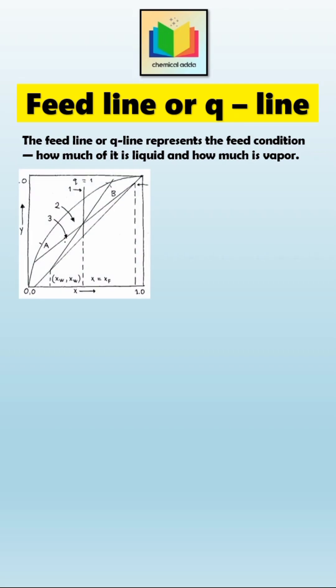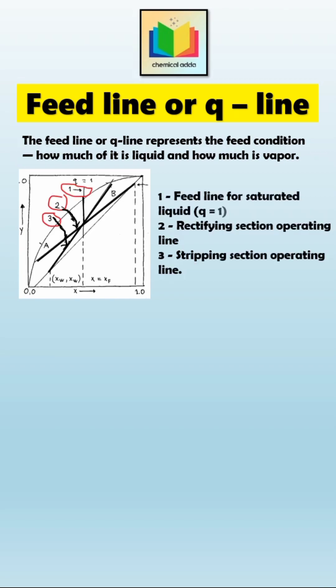On the McCabe-Thiele diagram, the Q line is the line that connects the rectifying section and stripping section operating lines. And its slope depends on the feed condition.